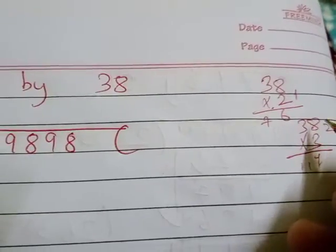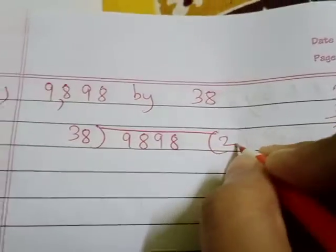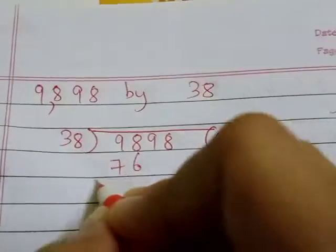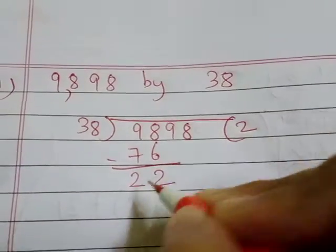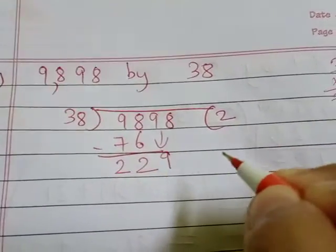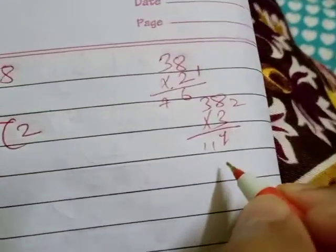We can take 76 two times. Now subtracting: 8 minus 6 is 2, and 9 minus 7 is also 2. We write 9 here, and now check 3 times.